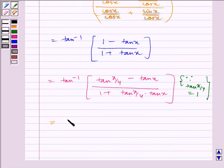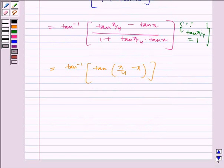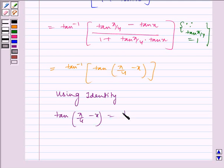Which is equal to tan inverse of tan(π/4 - x). Using the formula: tan(π/4 - x) = (tan π/4 - tan x)/(1 + tan π/4 · tan x).